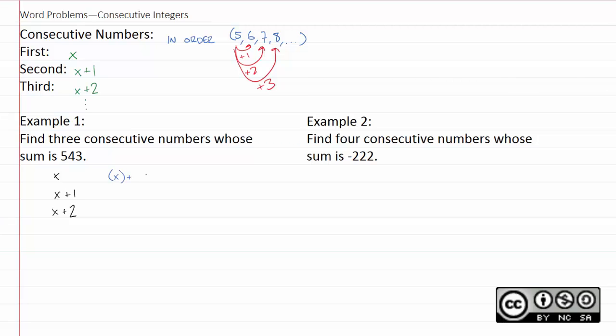So x plus x plus one, plus x plus two, all added together, come out to 543. We don't really need the parentheses, so I'll just drop them. You do want to write them in because they'll help you with some later problems, but for this one, it doesn't really matter.